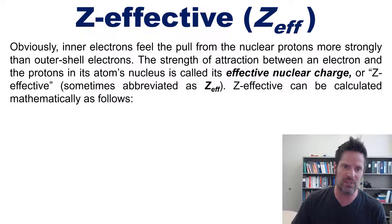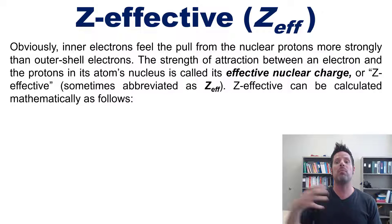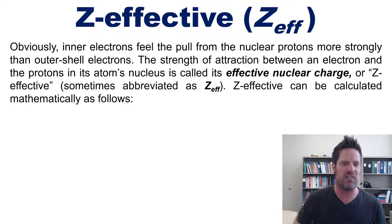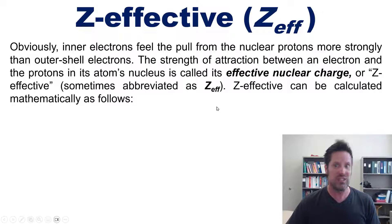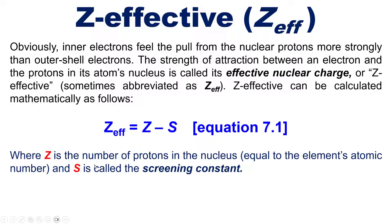Obviously, inner electrons closer to the protons will feel the pull more strongly than outer shell electrons. The strength of the attraction between an electron and the protons in its atom's nucleus is called its effective nuclear charge or Z-effective, sometimes abbreviated as Z-eff.